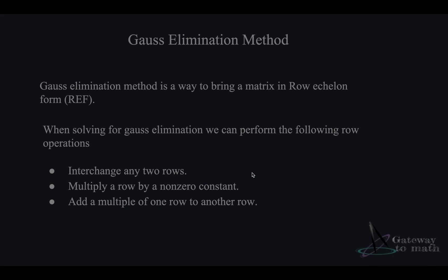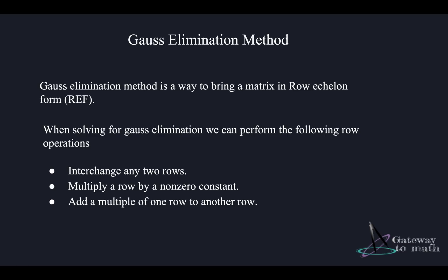There are different ways to bring a matrix in row echelon form. The Gauss elimination method is what we're going to discuss. There are other methods to solve linear equations represented as matrices, but to avoid overwhelming anyone, we'll focus on Gauss elimination and Gauss-Jordan elimination in this session. Gauss elimination method will bring our matrix in row echelon form.